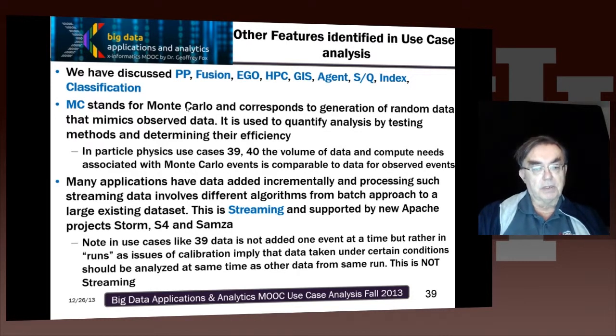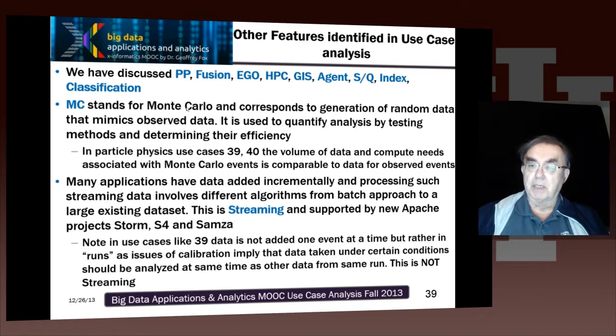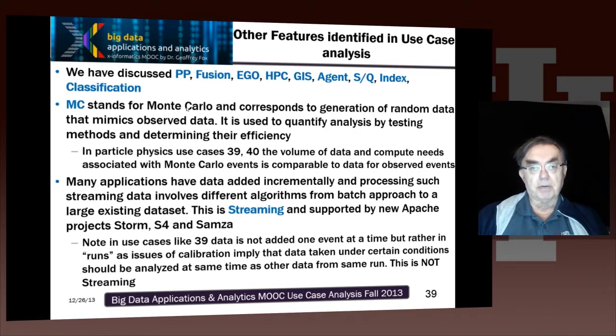So the stream model becomes a sort of incremental model — you take one run and add a new run. But each of those runs is a large amount of data, so it ends up not being quite streaming.